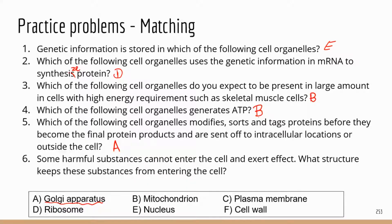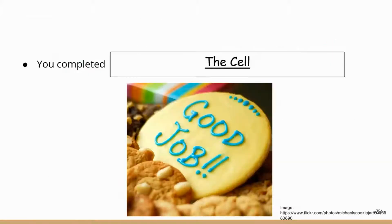Number six: some harmful substances cannot enter the cell and have an impact on it. Which structure keeps these substances from entering? Remember which structure is the door of your house that controls the in and out? That's going to be the plasma membrane, or cell membrane, which regulates the passage of substances in and out of the cell. So that's the chapter for the cell. Good job, guys.